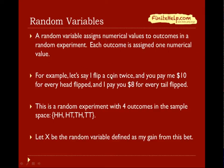Let's look at this random process where I flip a coin twice, and you pay me $10 for every head flipped, and I pay you $8 for every tail flipped. This is a random experiment with four outcomes in the sample space,